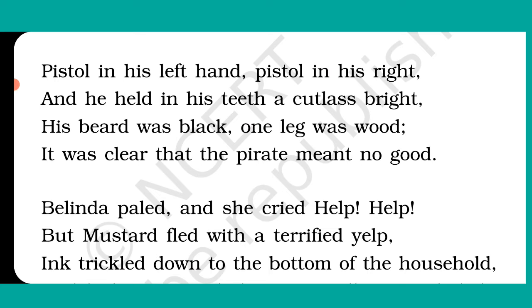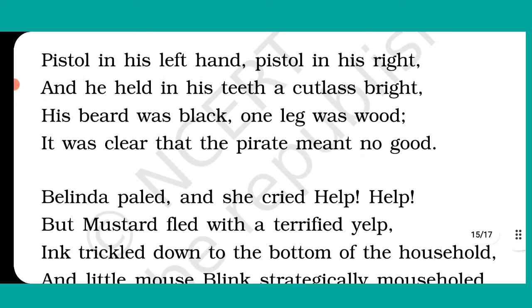The poet describes the appearance of the pirate. He says the pirate was holding a handgun in both hands and had a little sword too, which he was holding with his teeth. He had a black beard and one leg was made of wood. This means that though the pirate was a disabled person, he was still frightening all the other characters, and he intended to harm them ultimately.